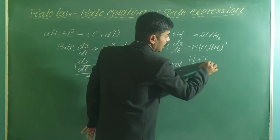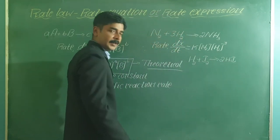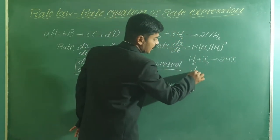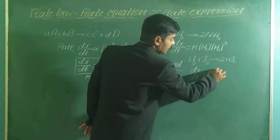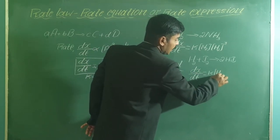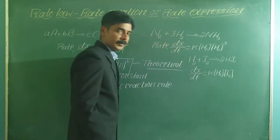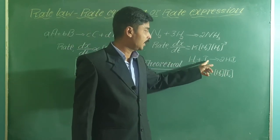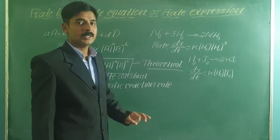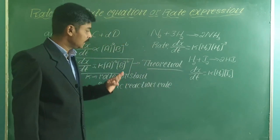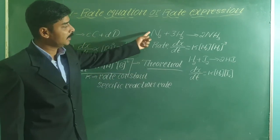One more example: H2 + I2 → 2HI. Applying law of mass action, the rate = K × [H2] × [I2]. The stoichiometric coefficient of both H2 and I2 is 1, so this is the theoretical rate expression. It is very easy to write once you know the balanced chemical equation.